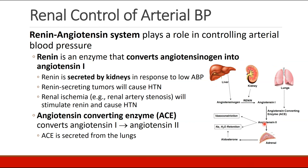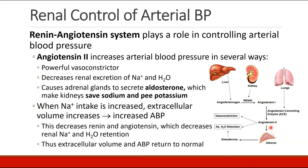The renin-angiotensin system plays an important role in controlling blood pressure. It starts with renin, which is secreted by the kidney. Renin acts on angiotensinogen, made by the liver, and when there is low blood pressure, the kidney secretes renin to convert angiotensinogen into angiotensin 1. Angiotensin 1 is converted by ACE — angiotensin-converting enzyme, secreted by the lungs — into angiotensin 2. Angiotensin 2 is a vasoconstrictor, decreases renal excretion of salt and water causing retention, and acts on the adrenal glands to cause secretion of aldosterone, which makes the kidneys save sodium and excrete potassium.